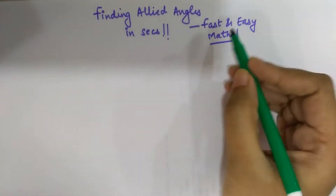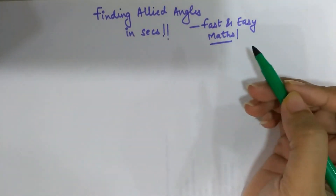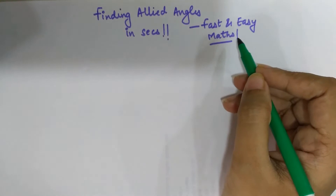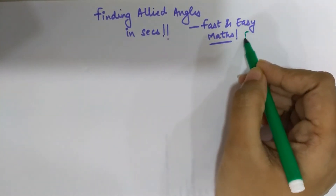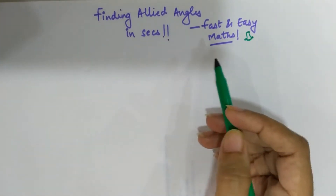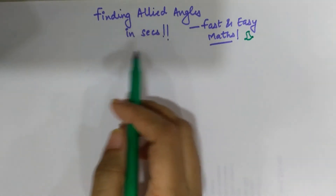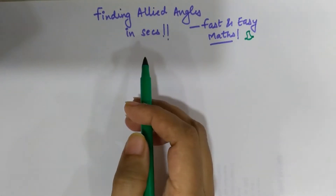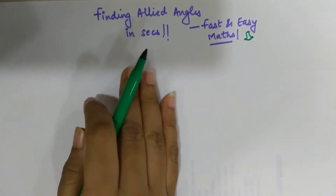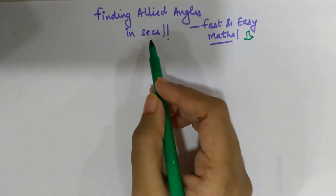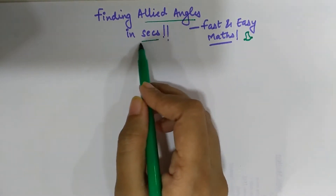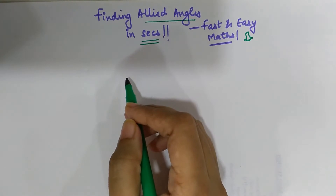Welcome everyone to my channel, Fast and Easy Maths, which is dedicated to giving you tips and tricks related to mathematics. If you're new to my channel, please hit the subscribe button and also hit the bell button so that you get notified whenever I push up a new video. Today I'm going to show you how to find allied angles in a matter of seconds.